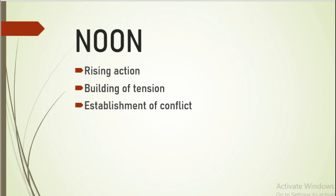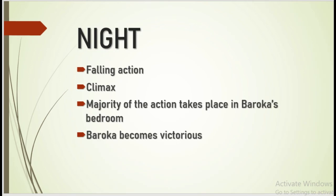Noon, which is the second act of the drama, creates tension with the establishment of the main point of contention in the drama. By Noon, Lakunle has Baruka as a rival in the struggle for Sidi's hand in marriage. Through Sadiku, Baruka's first wife, it is illustrated that the Lion of Illejunle is interested in marrying Sidi. Our curiosities and questions are answered in the third act, Night, as Baruka becomes victorious in the race for Sidi's heart.